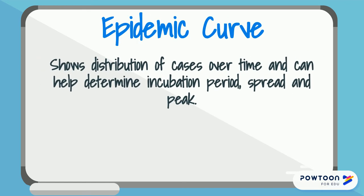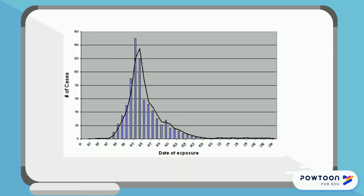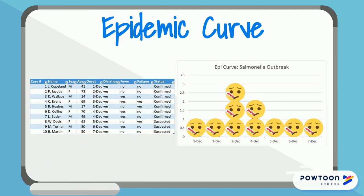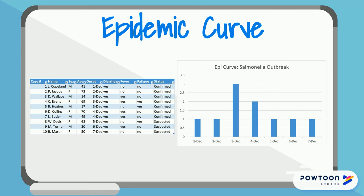An epidemic curve, or epi curve, is a tool that shows the distribution of cases over time and can help determine the incubation period, how the illness is being spread, and the peak of the outbreak. For an epi curve, you will need to collect disease onset. Information needed to create an epi curve is often obtained from the line list. It's a visual display of the onset of illness among cases associated with an outbreak. The x-axis (horizontal) shows the date of illness onset, and the y-axis (vertical) shows the count of cases on each date. Disease onset, incubation period, line list, infectious period, case definition, and epi curves are all part of the epidemiology aspect of the investigation.